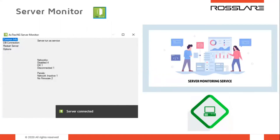The AXOX-NG server monitor is a program that monitors the AXOX-NG server, running in the system tray on your Windows desktop. It allows you to see what is going on in the background. The main window contains four topics: common info (general system information), database connection (to change the database connection string, requiring administrator password), restart server (to restart the AXOX-NG server, also requiring administrator password), and options covering SMTP configuration, reports directory, and static IP settings.